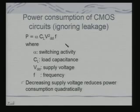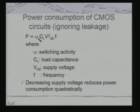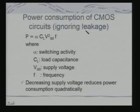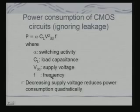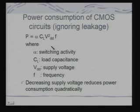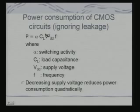How is power consumption calculated in a CMOS circuit? The expression is: Power = Alpha × CL × VDD² × F, where Alpha is a measure of switching activity, CL is load capacitance, VDD is supply voltage, and F is frequency. We are ignoring the leakage component. What is interesting is that decreasing supply voltage reduces power consumption quadratically — the relationship is square — and you can understand why that becomes an issue for designing power-efficient architectures.